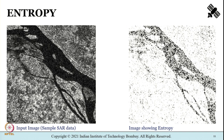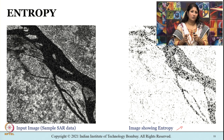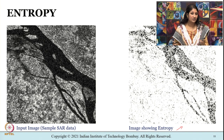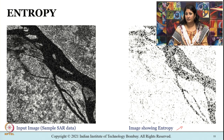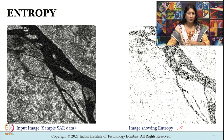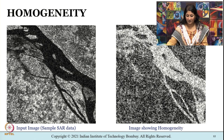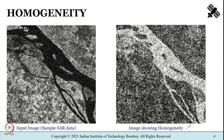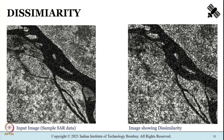Similarly, we can also have entropy, which is another textural feature. For more details about each of these textural features, I would suggest you refer to Haralick et al. 1973. Here I will introduce some textural features and how they can be applied in image processing, without depicting all the mathematical relationships. We can also have an image showing homogeneity - another textural feature. We can also have dissimilarity - another textural feature.